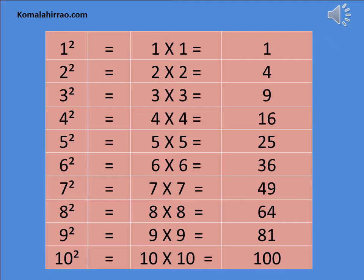5 square is equal to 5 multiply by 5 is equal to 25. 6 square is equal to 6 multiply by 6 is equal to 36. 7 square is equal to 7 multiply by 7 is equal to 49. 8 square is equal to 8 multiply by 8 is equal to 64. 9 square is equal to 9 multiply by 9 is equal to 81. 10 square is equal to 10 multiply by 10 is equal to 100.